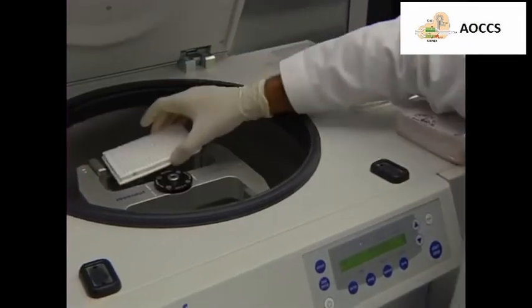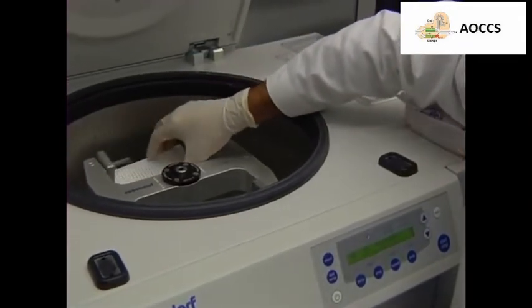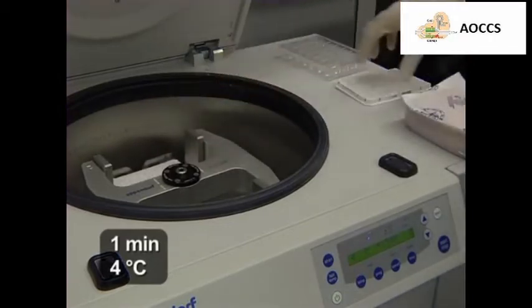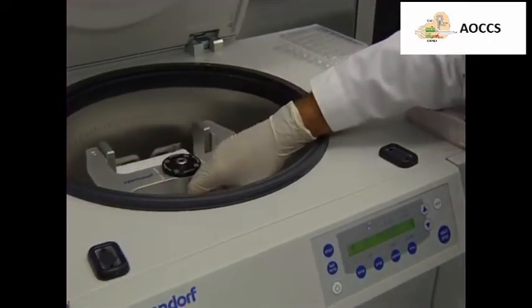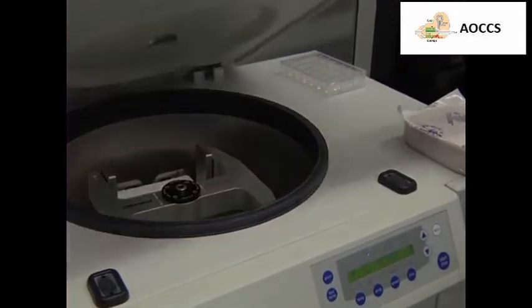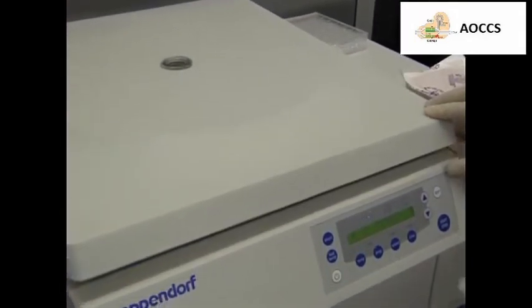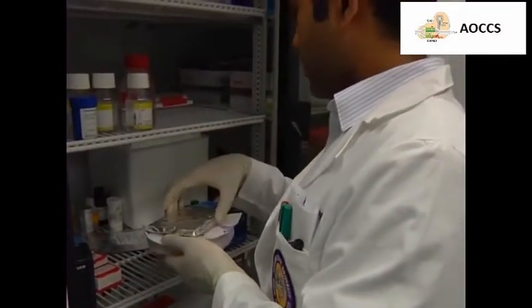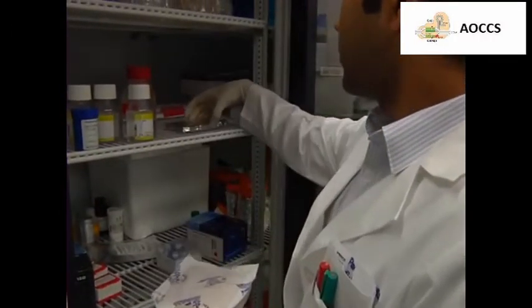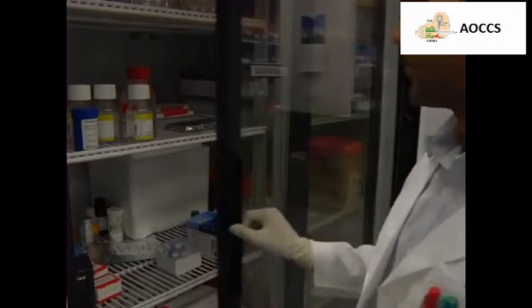After adding the MasterMix, briefly spin the plate in a refrigerated centrifuge at 1,500 times G to pull the solution to the bottom of the wells, mix the samples, and remove air bubbles. To pause the experiment at this point, store the reactions in an area protected from light at 4 degrees Celsius for up to 24 hours.